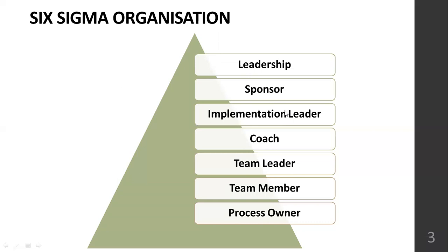The seventh role is Process Owner — anyone who takes responsibility for the process after the Six Sigma project has been completed. Sometimes a Six Sigma project is successful, sometimes unsuccessful, and sometimes it may not deliver the desired results. In cases where the project could be considered a failure, the process owner takes responsibility.